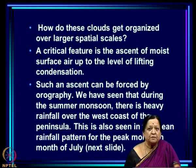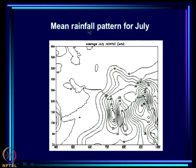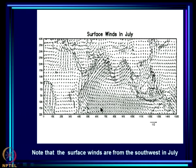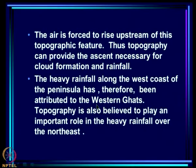Such an ascent can be forced by orography — that is, topography or mountains. During the summer monsoon, there is heavy rainfall over the west coast of the peninsula. The mean July rainfall is very heavy over the west coast and the Western Ghats. Surface winds in July want to cross the coast, but they meet the Western Ghats and must ascend upstream of the range, leading to clouding because the air is very moist.